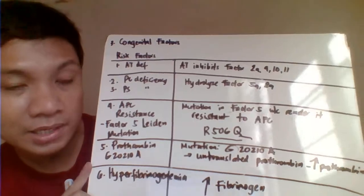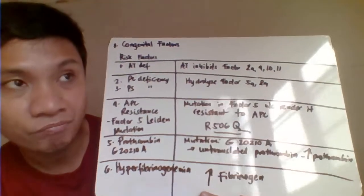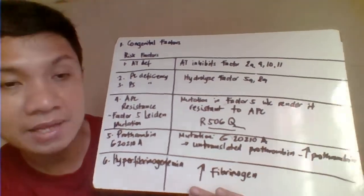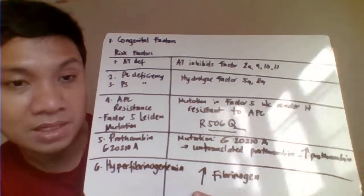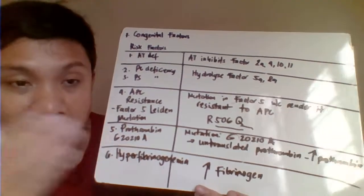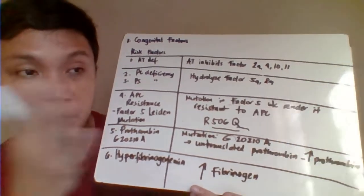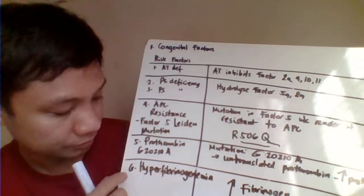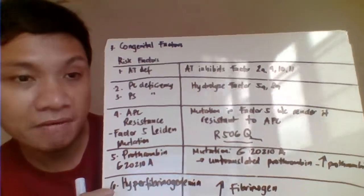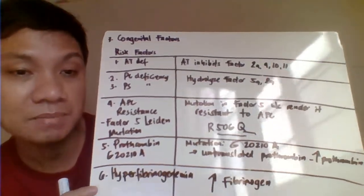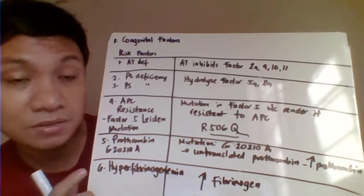Prothrombin G20210A is another mutation where adenine replaces glycine at position 20,210. This renders prothrombin untranslated, causing prothrombin levels to increase. With more prothrombin, more thrombin is produced, converting more fibrinogen to fibrin clot, resulting in thrombosis. Hyperfibrinogenemia — excess fibrinogen substrate — also results in excess clot formation and thrombosis.